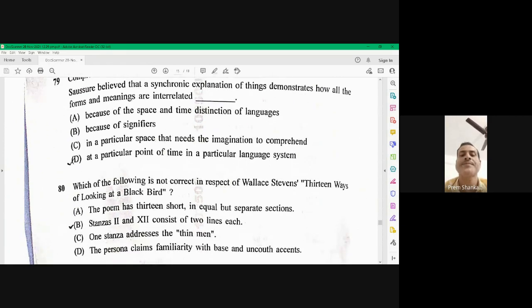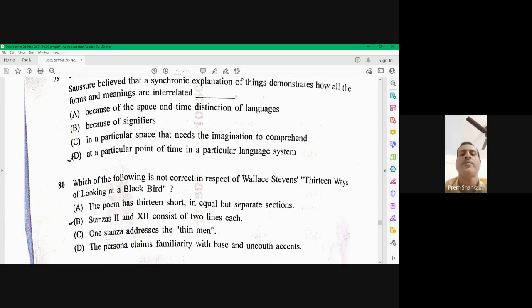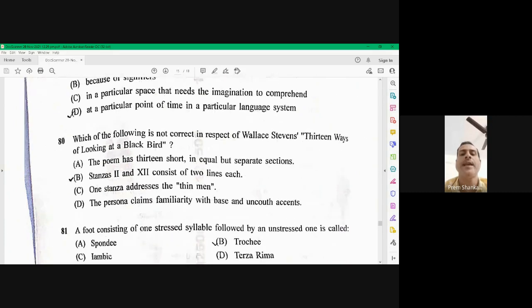Question number 80. Which of the following is not correct in respect of Wallace Stevens, 13 ways of looking at a blackboard. Option A, the poem has 13 short in equal but separate sections. That is right. The stage at two and 12 consists of two lines each. That is wrong. The stage at three and 12 are of two lines each. So that is the wrong option here. Rest all are the right option. So not correct is B. It is B.